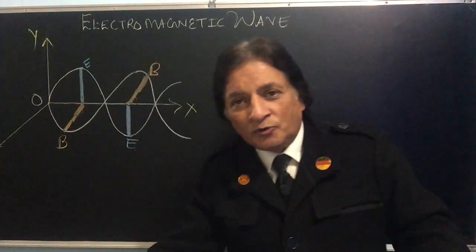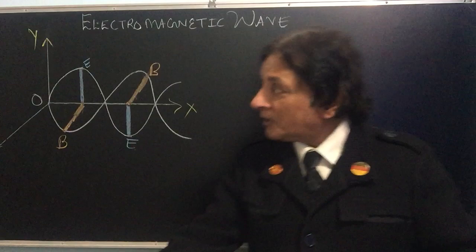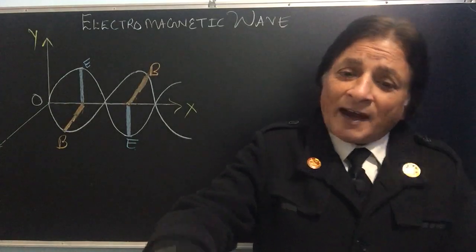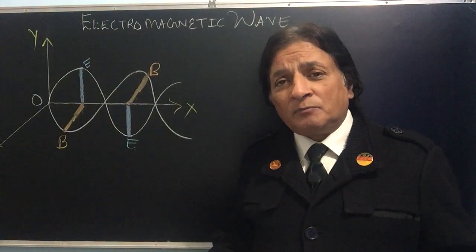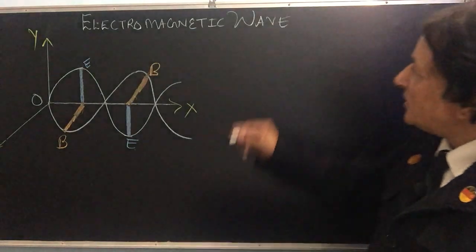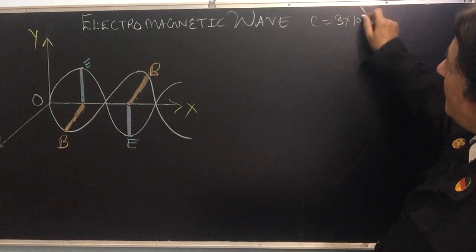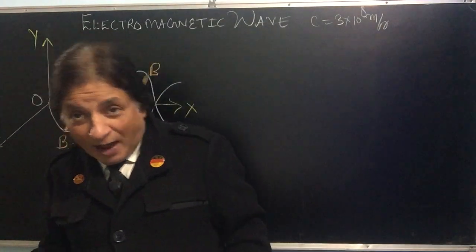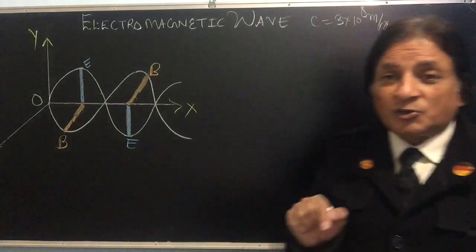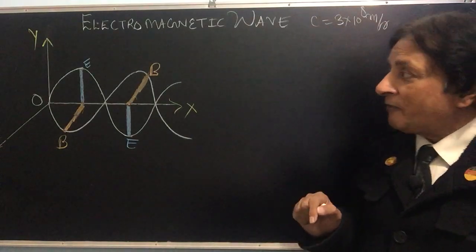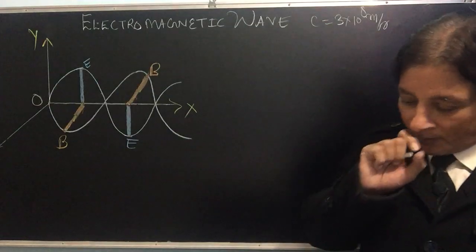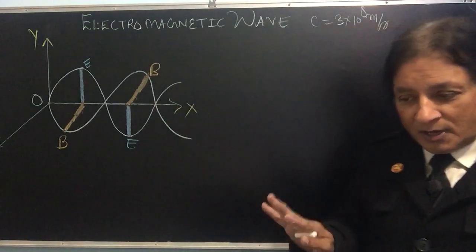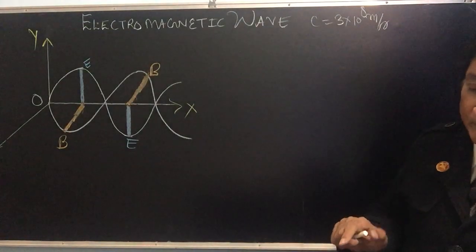Hello students, welcome to Vipin Sharma Physics channel. My topic is electromagnetic waves. The question is: suppose you have got a question in your paper — prove that the speed of light is 3 × 10⁸ meter per second. If you have to answer this as a 3-mark question, how will you do this?